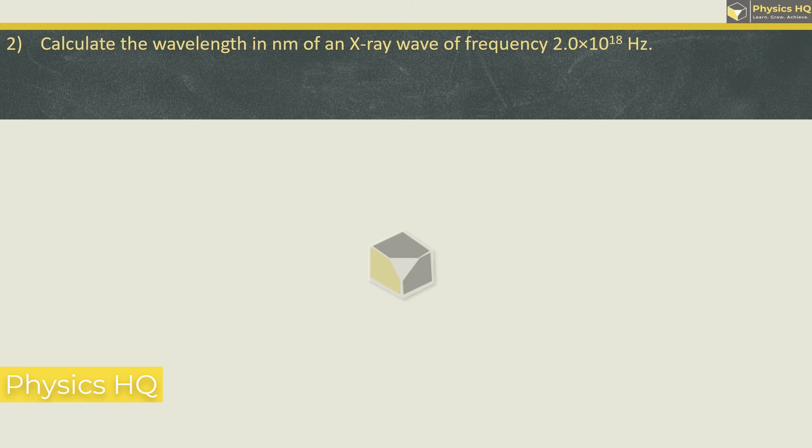Hope you all understood this. Calculate the wavelength in nanometer of an X-ray wave of frequency 2 into 10 raise to 18 hertz. Once again, same formula V is equal to N lambda. Wavelength is V by N. Velocity is 3 into 10 raise to 8 divided by frequency 2 into 10 raise to 18. 3 by 2 is 1.5 into 10 raise to minus 10. We need to give answer in nanometer. Nanometer is 10 raise to minus 9. So we got 0.15 into 10 raise to minus 9 meter which is 0.15 nanometer.